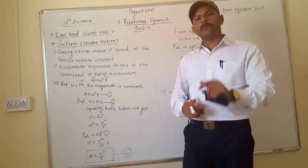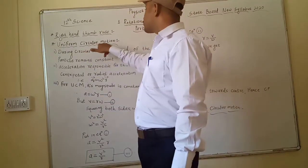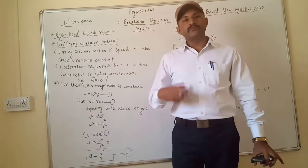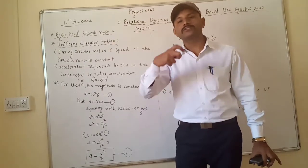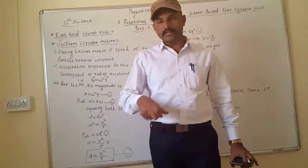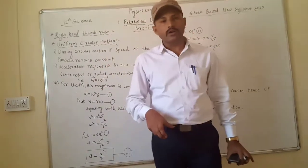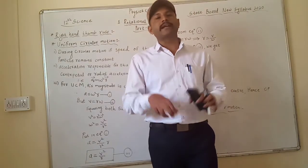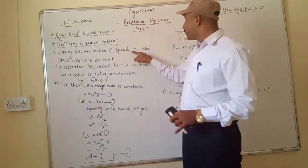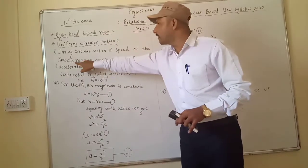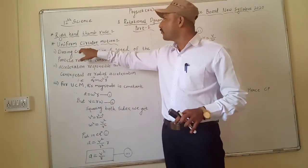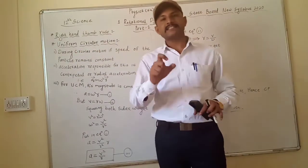Next, the very important point: uniform circular motion. Uniform means continuous and constant speed. During circular motion, when the speed of the particle remains constant, that motion is called uniform circular motion.